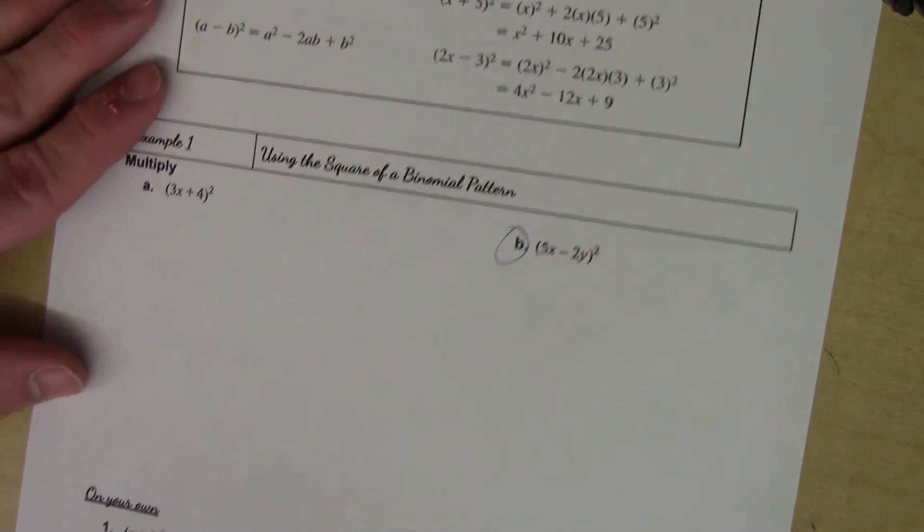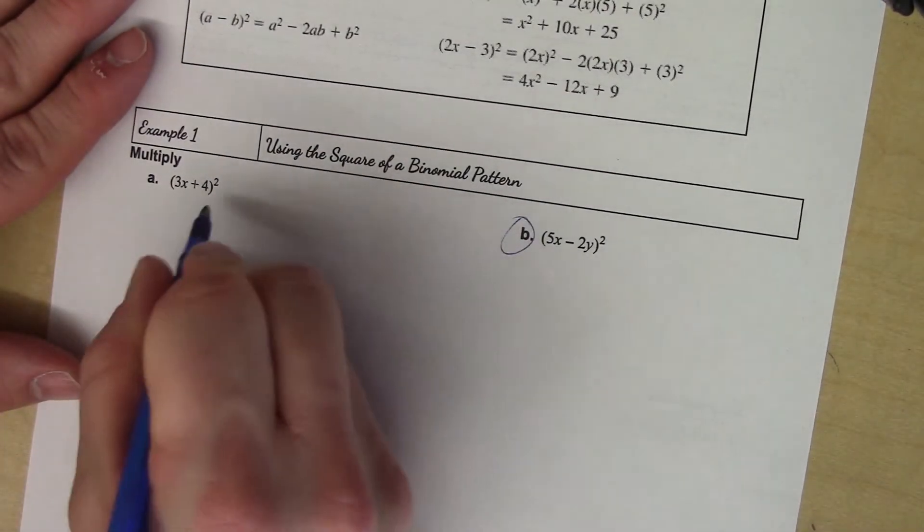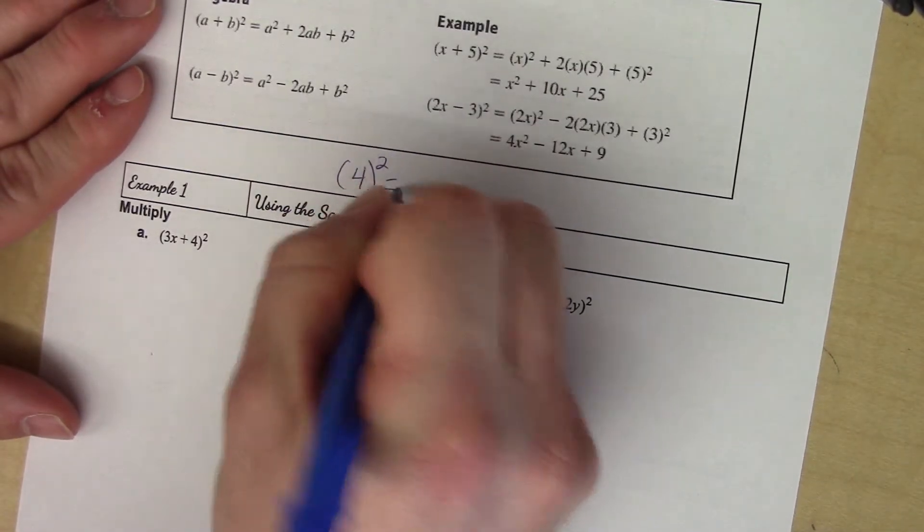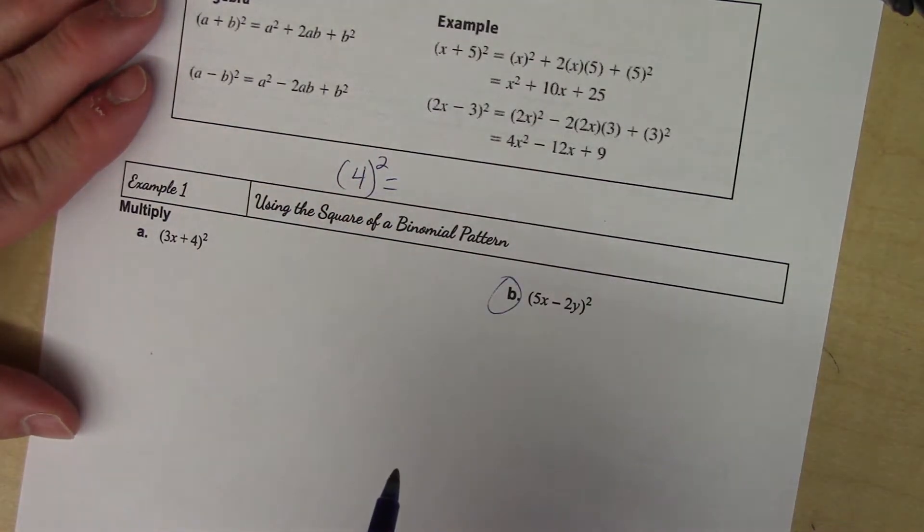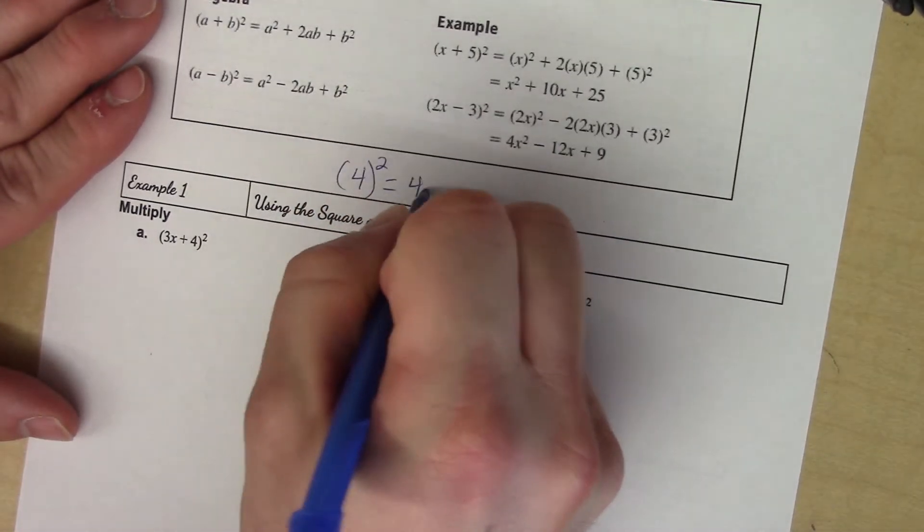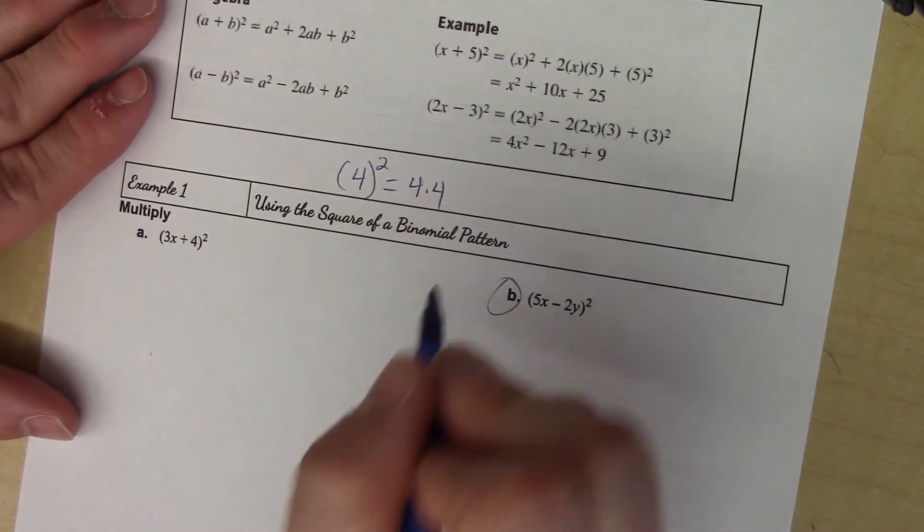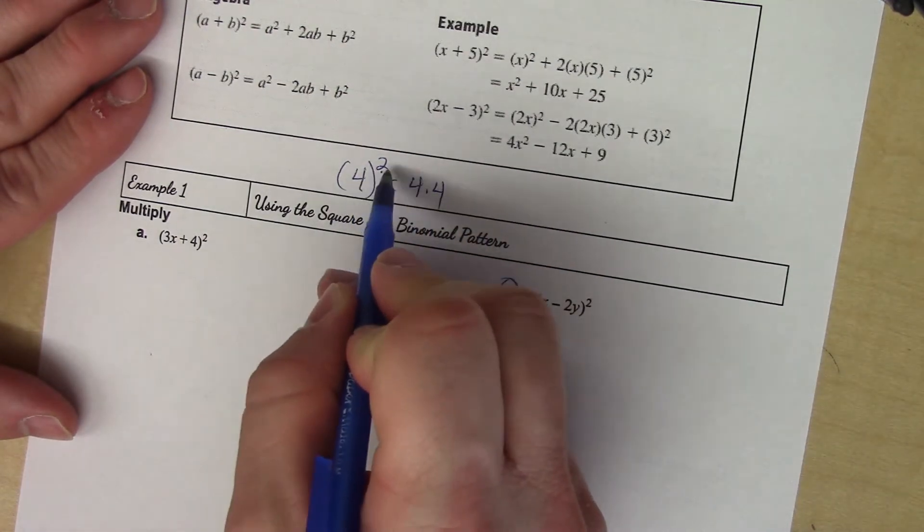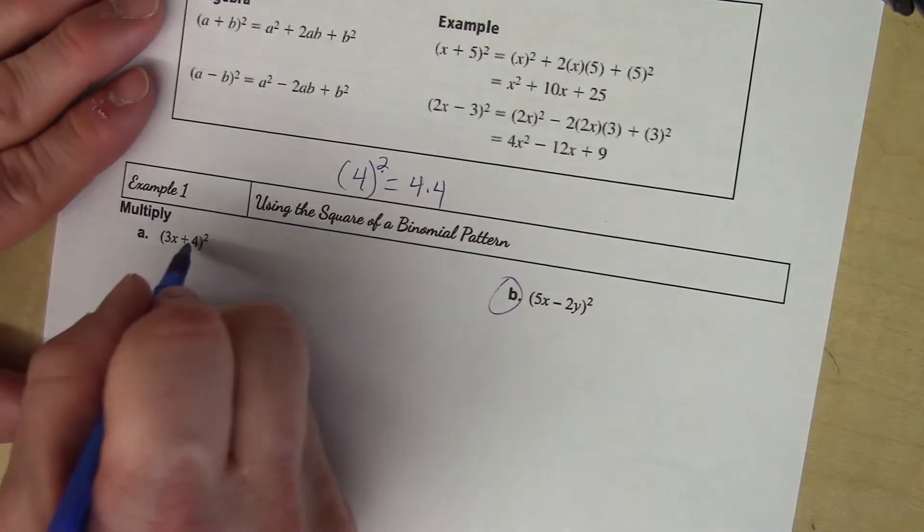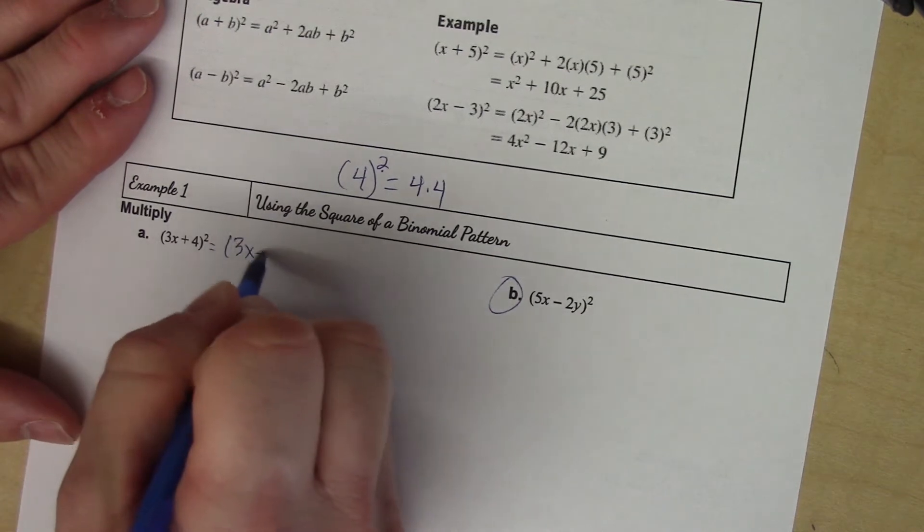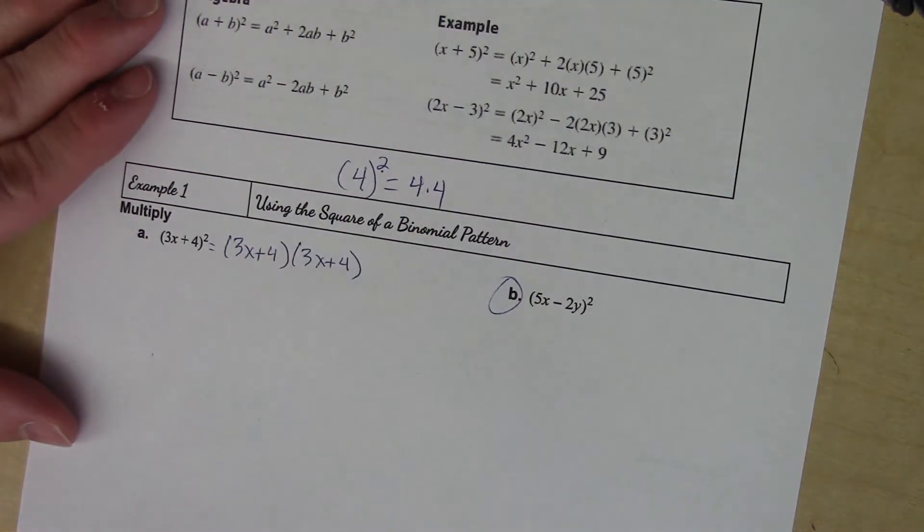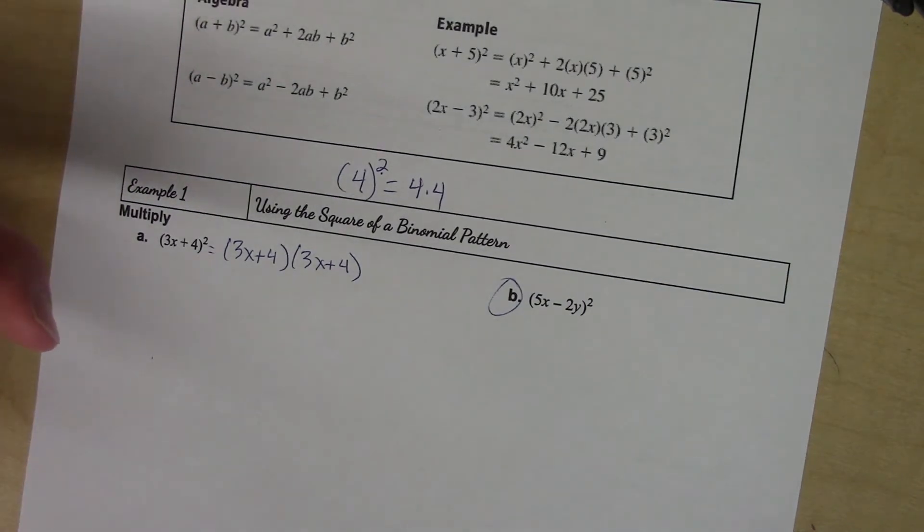Let's take a look here. (3x + 4)² - well, think about it. What does 4² mean? Not what's the answer, but what does it mean? It means 4 times 4, which yes, we can solve by multiplying and getting 16, but anything squared means times it by itself. So this means (3x + 4) times (3x + 4).